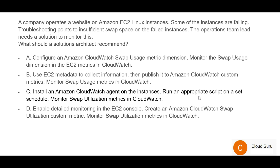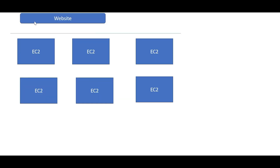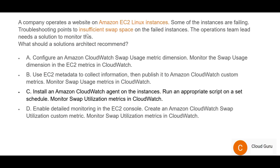Let's see Question 53. The keywords: there is a website residing on multiple EC2 instances, some instances are failing due to insufficient swap space, and we need to identify what option to follow to monitor this. Option A mentions something called a 'metric dimension' — there is no such thing; we monitor metrics using CloudWatch. So A is wrong.